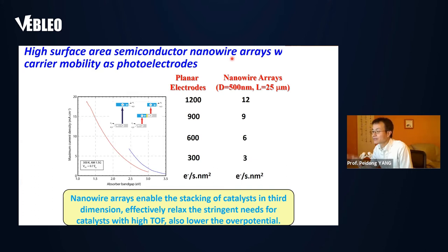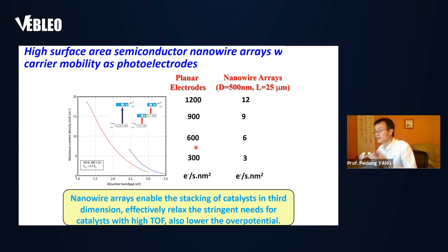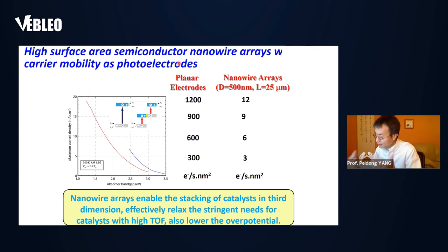High-surface-area semiconductor nanowire arrays solve this solar flux mismatching issue in one step. First, they have high surface area. Second, they have large carrier mobility, so once the semiconductor nanowire absorbs solar photons and generates minority-carrier electrons, these electrons can effectively transport to the nanowire surface. For example, a nanowire array several hundred nanometers in diameter and 20–30 microns long can have a surface area 100 times larger than a planar surface. If the surface area is 100 times larger, the electron flux is diluted from 1000 to roughly 10 electrons per second per square nanometer—sufficiently manageable.